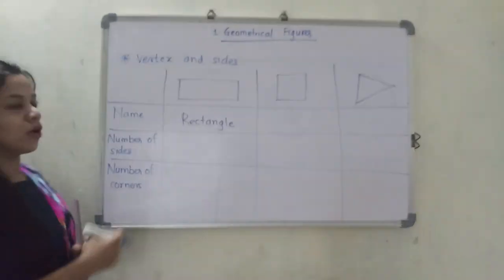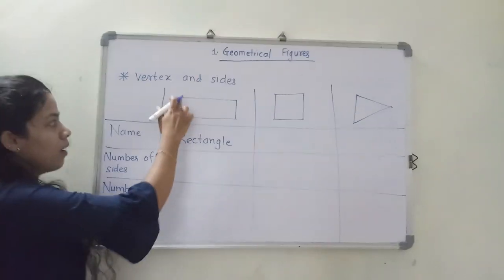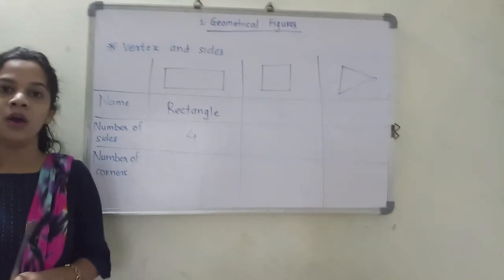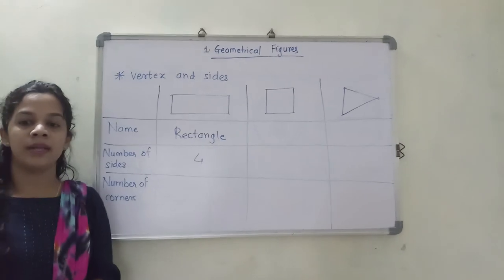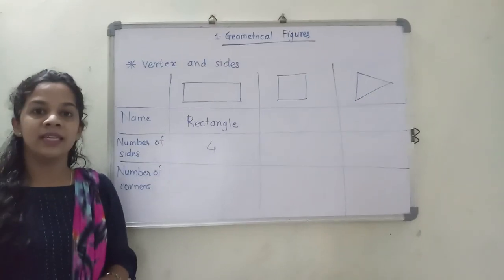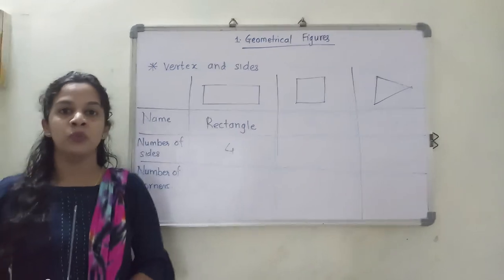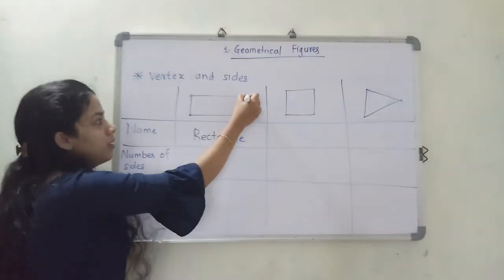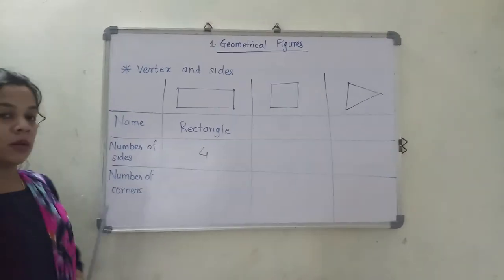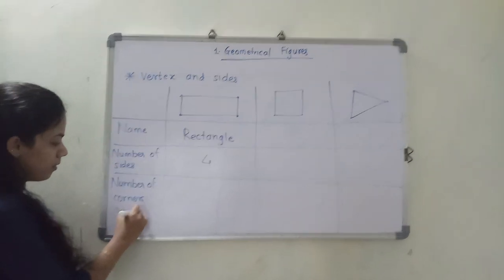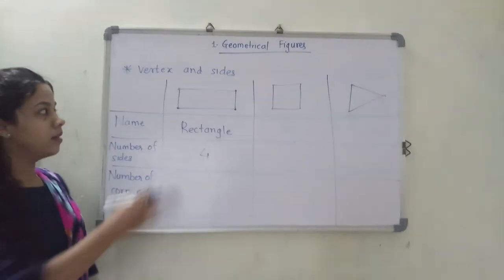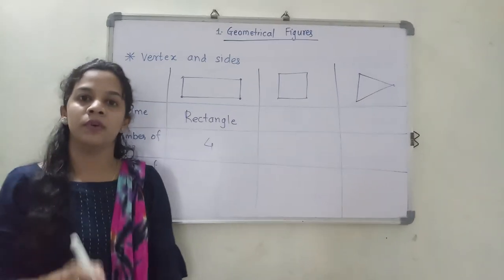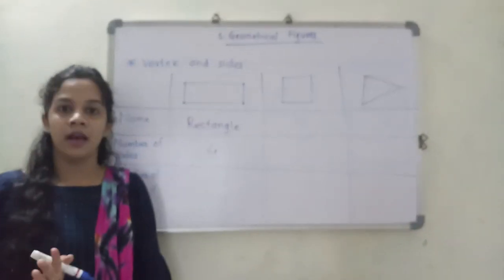Can you tell me the number of sides present? We will count 1, 2, 3 and 4 - so there are 4 sides. Can you tell me how many corners are present? Corners are also called vertices. Where these sides meet each other, they are called the vertex. The number of vertices here are 1, 2, 3, 4. We are going to say vertices because there are 4.